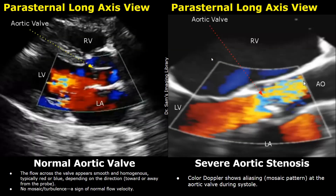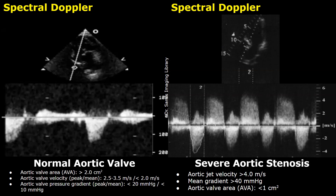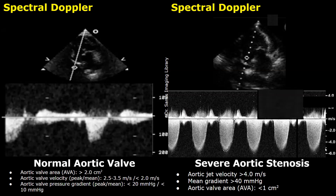In severe stenosis, the turbulence and mosaic pattern are very prominent. This type of color mixing is very commonly seen in severe aortic stenosis. On spectral Doppler, the aortic jet velocity is greater than 4 m/s — here it is almost 5 m/s. The mean gradient will be greater than 40 mmHg; in this case it was 53 mmHg. The aortic valve area is less than 1 cm². Additional cases shown also demonstrate peak aortic jet velocity greater than 4 m/s consistent with severe aortic stenosis.